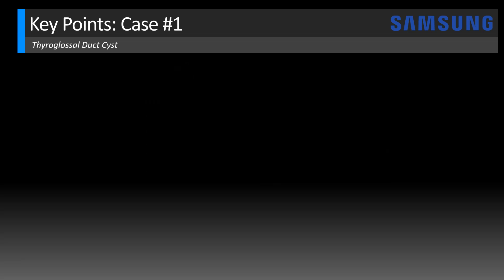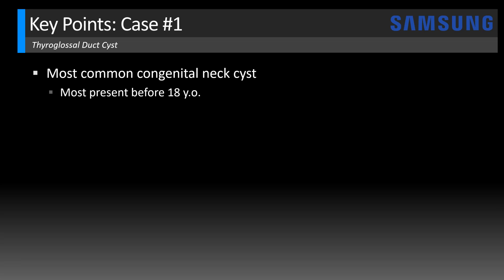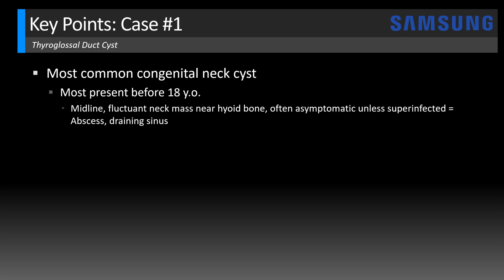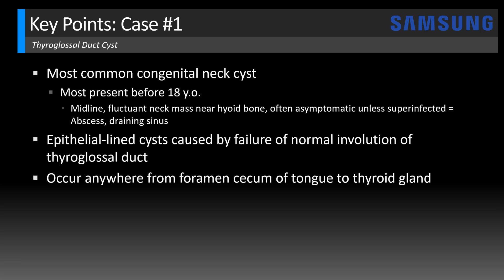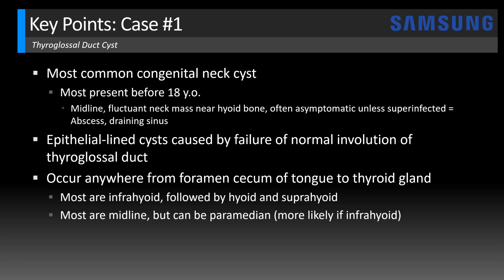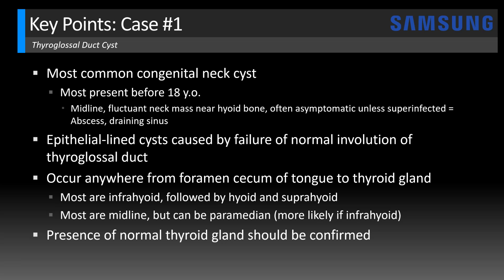Key points for case one: thyroglossal duct cysts are the most common congenital neck cysts. Most present before the age of 18 — one study showed patients from age 2 to 50, but the vast majority will be pediatric. Classically they present as a midline fluctuant neck mass near the hyoid bone, typically asymptomatic unless superinfected, when patients may present with abscess or a draining sinus. These are epithelial-lined cysts caused by failure of normal involution of the thyroglossal duct, which extends from the foramen cecum to the thyroid gland. Most are infrahyoid, with the rest occurring at or above the hyoid bone. Most will be midline but often at least slightly perimedian, and the more infrahyoid the cyst, the more likely it is to be perimedian. It's important for clinical and surgical planning to identify the presence of a normal thyroid gland on these studies.